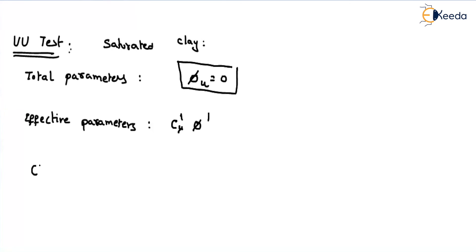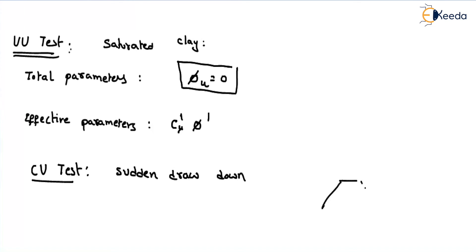For the consolidated undrained test, in the first stage drainage is allowed, but in the second stage drainage is not allowed. Consider the sudden drawdown condition — for example, an earth dam where water level is at height H and water seeps through the soil, meaning drainage is allowed and consolidation happens. If the water level suddenly drops to zero, there is no drainage condition. That is why it is called sudden drawdown condition, and for this we use the consolidated undrained test. For normally consolidated clay under undrained conditions, C_U equals zero. For overconsolidated clay, you will have both C_U and phi_U.